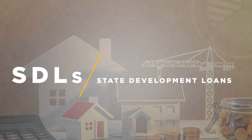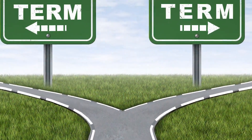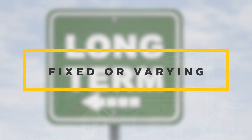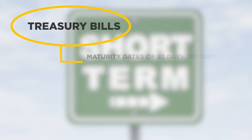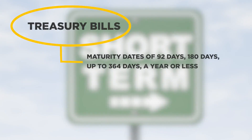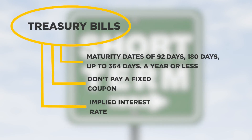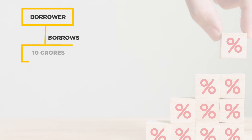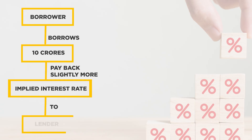Whether it's the government at the central or state level, the borrowings can be short-term or long-term. The long-term interest could be fixed or varying, though most of the time it is fixed. The short-term instruments are often called treasury bills and they have maturities of 92 days, 180 days, up to 364 days — a year or less. Unlike bonds, these don't pay a fixed coupon; there is no direct interest rate. The interest rate is implied — meaning if the borrower wants to borrow 10 crores, they will pay back slightly more, and that difference becomes the implied interest rate paid to the lender.